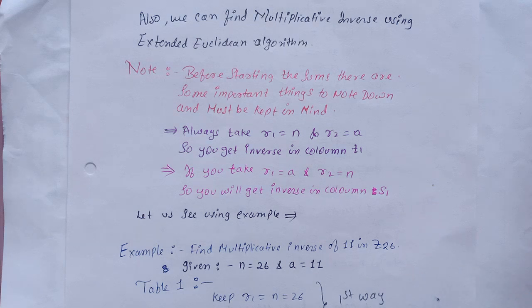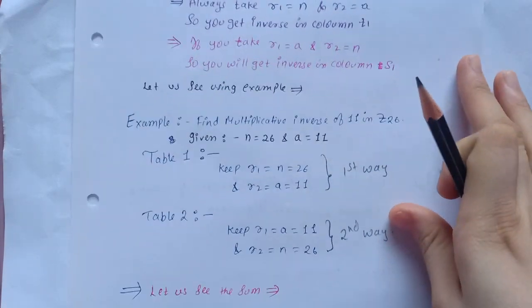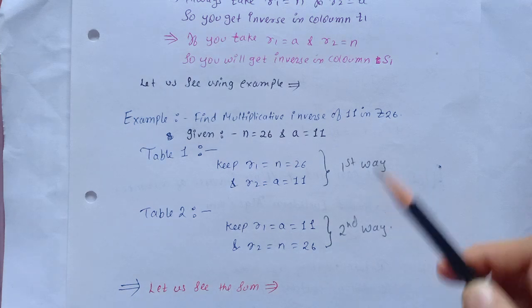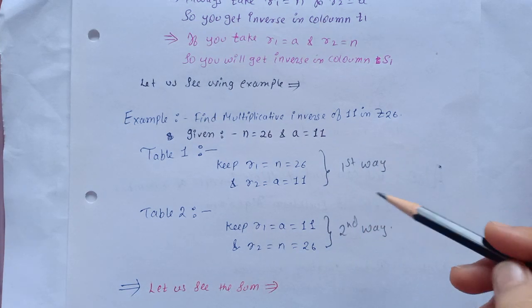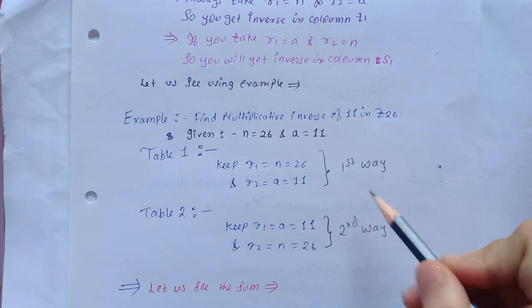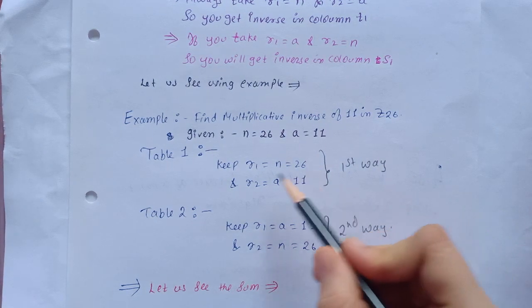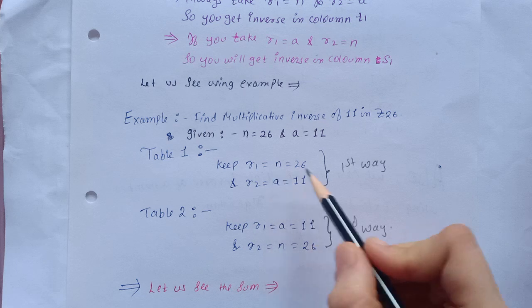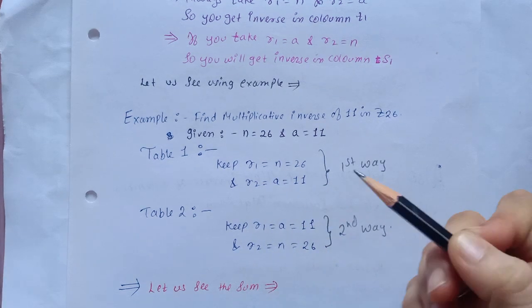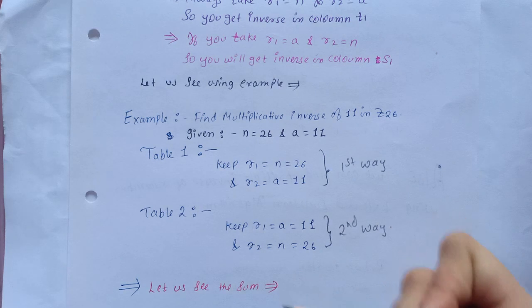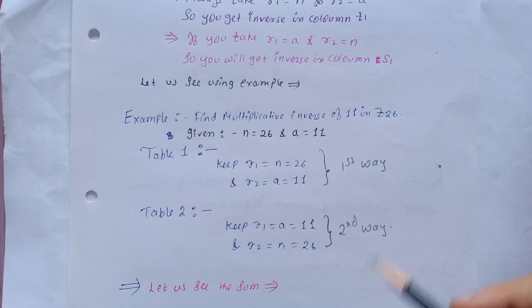So let's see some example. I will show the example while solving in both ways, because some people make confusion here. They take r1 equal to n and r2 equal to a and try to find inverse in the s column, or either ways they take it opposite. So I will show you in both ways. Let's see the sum.